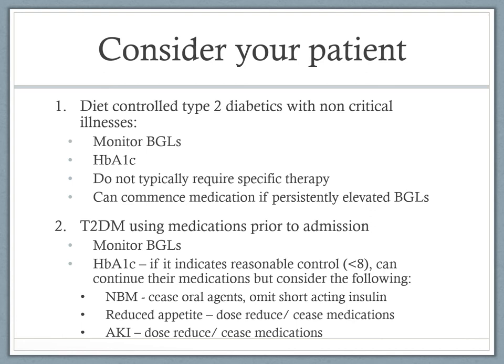The second scenario is a type 2 diabetic on medications prior to admission. Similarly, you want to monitor blood glucose levels, check the HbA1c, and if it indicates reasonable control — a HbA1c less than 8% generally — you can continue their medications. However, you need to consider why the patient is in hospital. If the patient is nil by mouth for theatre, you would cease oral agents and omit short-acting insulins. If they have a reduced appetite or an AKI, consider reducing medication dosages or stopping them altogether and monitoring until the patient is well enough to recommence.